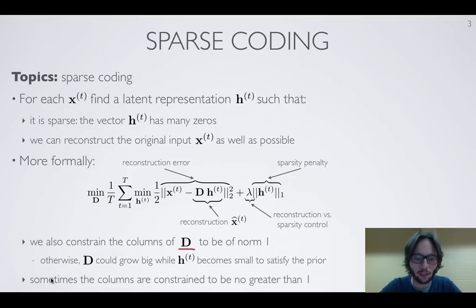Sometimes in the literature you find that people instead for the constraint, they'll just constrain their norm to be no greater than 1. It's just an alternative formulation, but the idea behind it is the same.